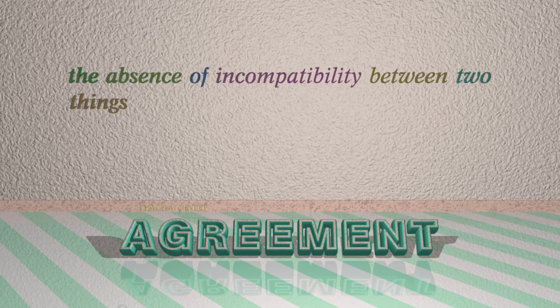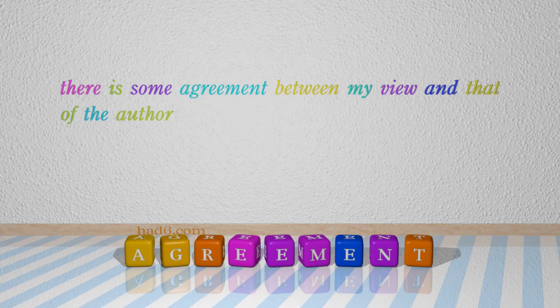Number 1: Agreement. Which means the absence of incompatibility between two things. For example: There is some agreement between my view and that of the author.